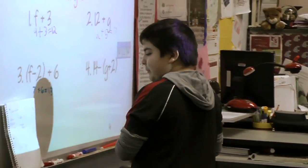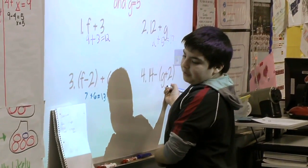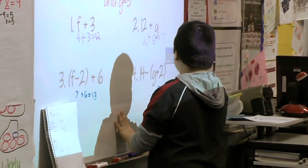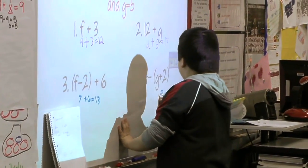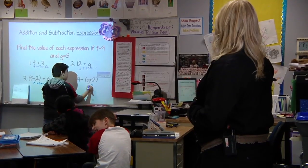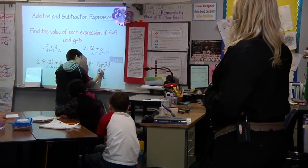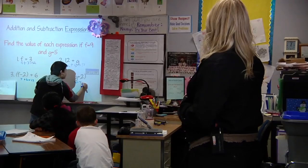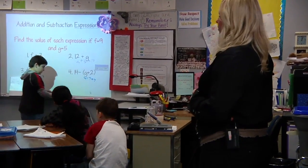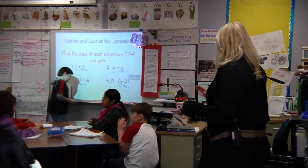And for number 4, I put the parentheses first and it equaled 7, but I couldn't do it because it's supposed to be minus 14, but if I put the minus 14 right here it won't work. So I put it right here, and it just came out to be 7. Excellent, good job. Anybody have any questions for Jay? Alright, give him a hand. Good job.